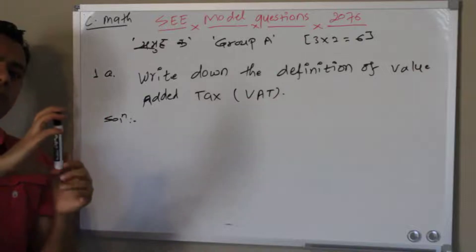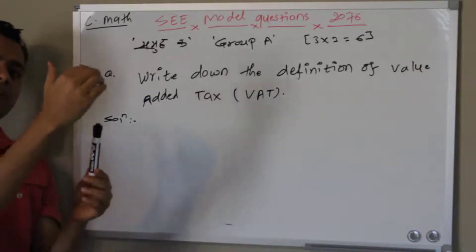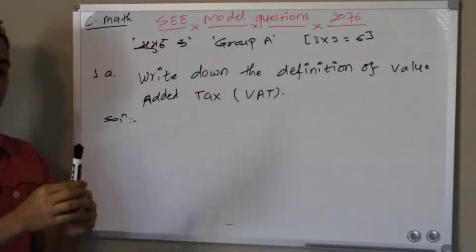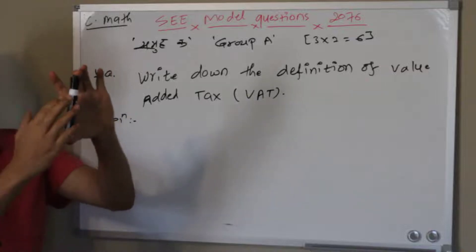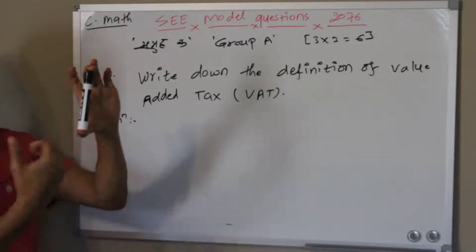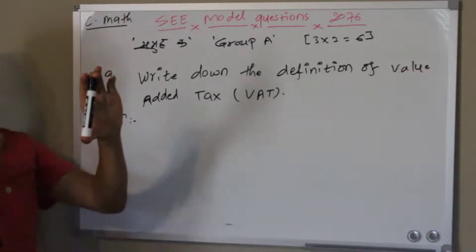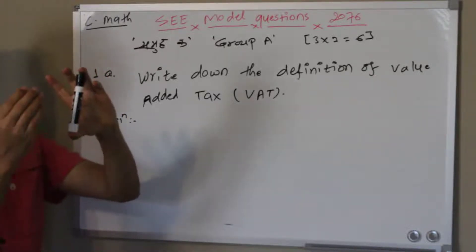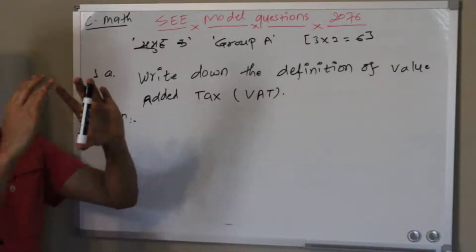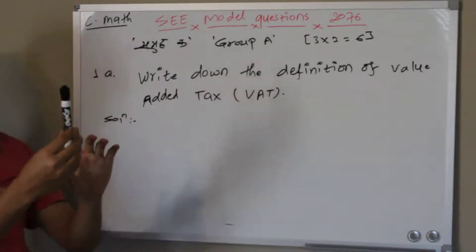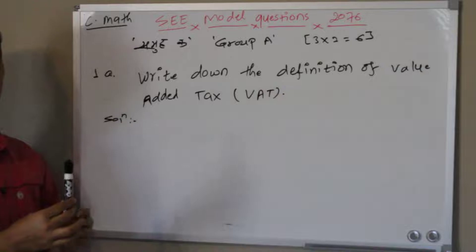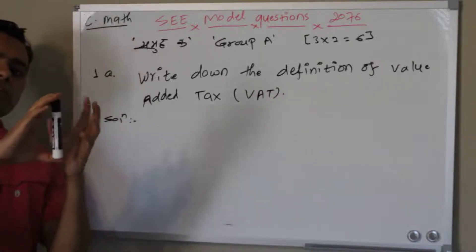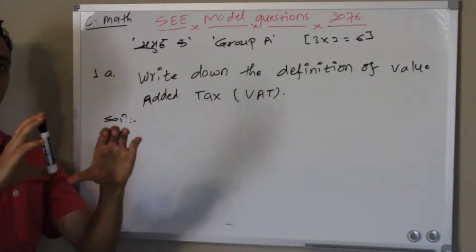Similarly, when they prepare this, they have to hire some labor, they have to hire people to make this one. On this they also have to pay the tax. Now when they sell to the distributors and other people, they charge some tax. So all of those taxes are indirect tax.